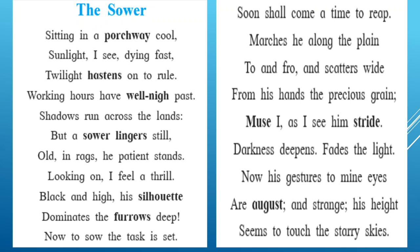Basically, the poem The Sower is written in well-versed and simple language — it is easy to understand. Victor Hugo, who wrote this poem in French, and Toru Lata Dutt, who translated it into English, have neatly described the activities, expectations, and life of the farmer. It doesn't matter whether the farmer is from India or from any other country — all farmers are generally having the same situation. They go through the same mental stress and economic hardship.